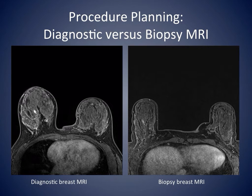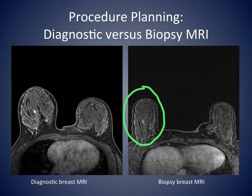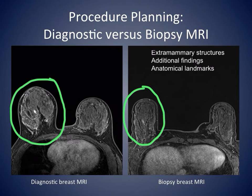The radiologist feedback corner is designated for radiologist comments and feedback on the procedure to ensure continued progress. Comparison of the diagnostic breast MRI on the left and the biopsy MRI on the right shows the difference due to immobilization of the breast in the coil during a biopsy. As the appearance of the compressed breast may be substantially different from the non-compressed breast, anatomical landmarks, additional findings, and extramammary structures should be used to confirm the correct lesion has been identified for targeting and sampling.